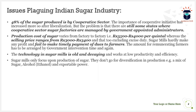Because sugar mills face losses, they fail to make timely payments to farmers who sell their sugarcane to the mills. This creates stress in the agriculture sector, because farmers who don't receive timely payment have to take loans for the next cultivation season. The remuneration is less and has to be arranged through government intervention, which then pays sugar mills so they can pay farmers.